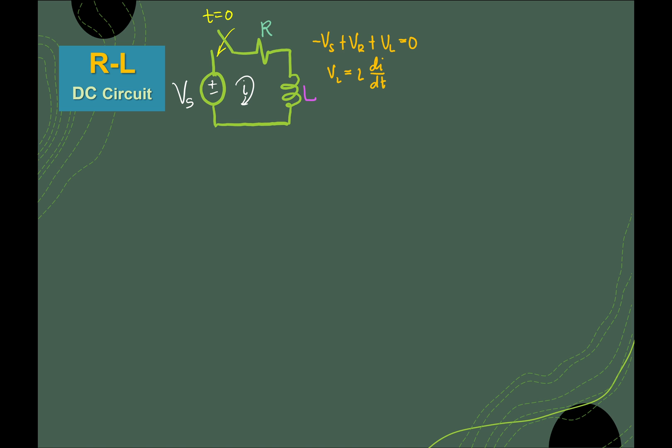Given this KVL, we can try to understand the behavior of the circuit. As I said, this is the rate of your current, meaning we will try to understand the circuit given the current or based on current. So this is the first expression.